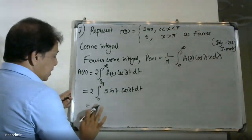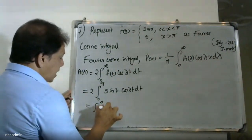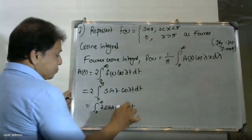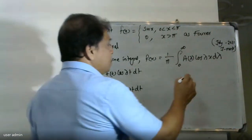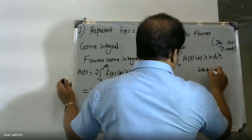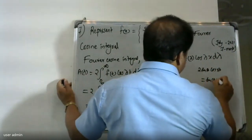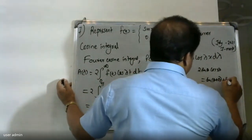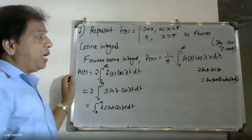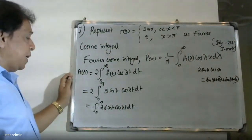This is equal to 2 times the integral from 0 to π of sin(t) cos(λt) dt. Now we apply the product-to-sum formula: 2 sin(a) cos(b) = sin(a+b) + sin(a-b). Applying this trigonometric formula, 2 sin(t) cos(λt) = sin(1+λ)t + sin(1-λ)t.